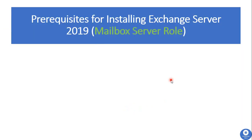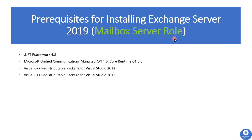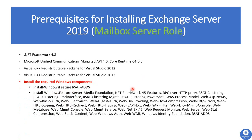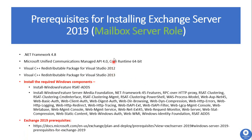Next, we will see prerequisites for installing Exchange Server 2019. These are the required prerequisites for installing the Mailbox Server role. You need to install the required software on the Windows Server where you are installing Exchange 2019, along with the required Windows components. You can run two commands in Windows PowerShell, and after running them, all required Windows components will be installed. The first four software packages can be downloaded from the Exchange 2019 prerequisites URL. After installing the components and software, a server restart is required.